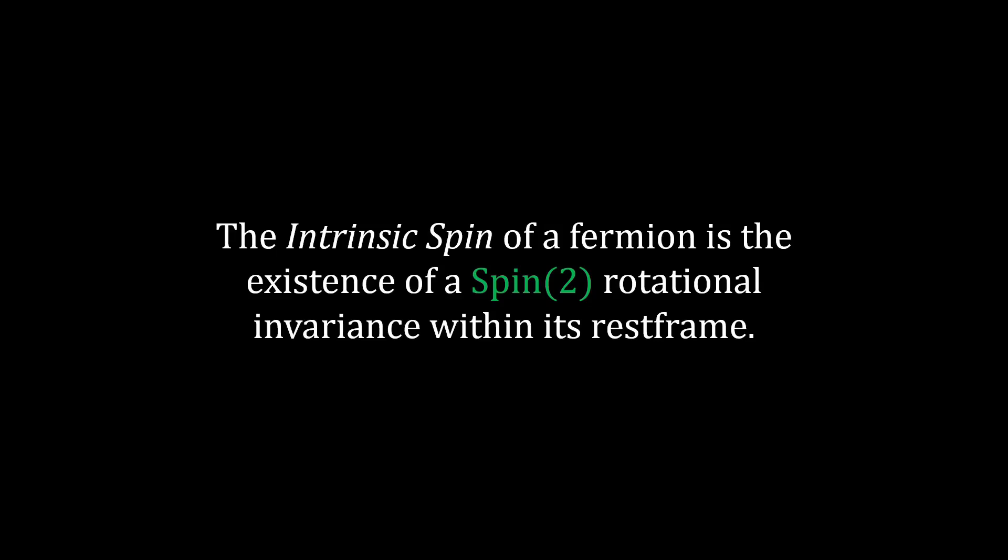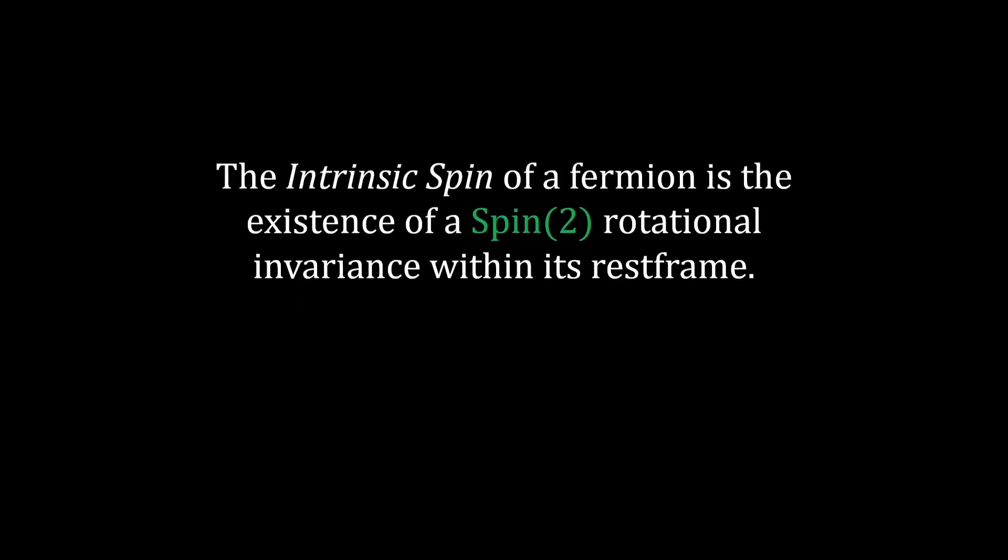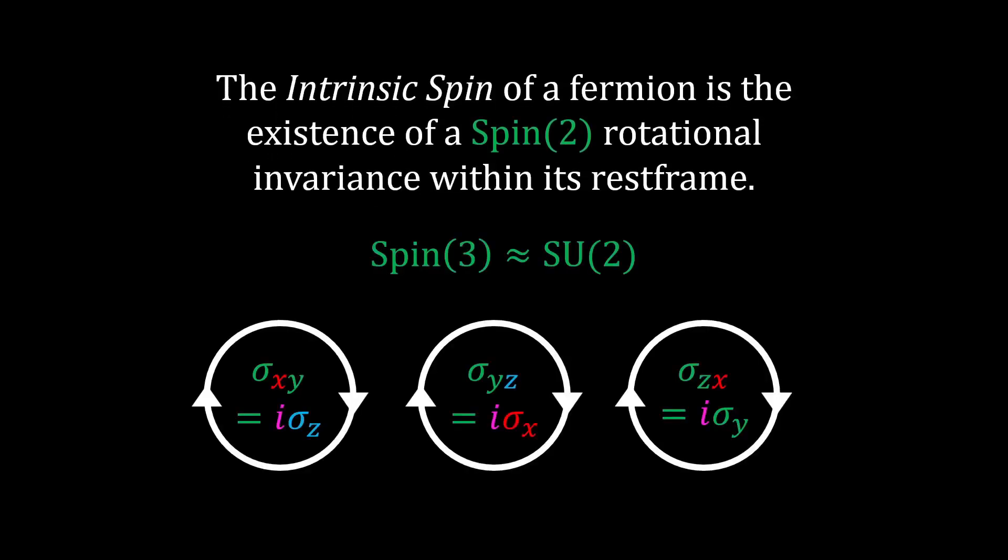After reading a bunch of references on spinors and trying to use geometric algebra to describe spin, the definition of spin that my brain eventually landed on is that the intrinsic spin of a fermion is the existence of a rotational invariance within its rest frame. Specifically, this is a spin 2 invariance.